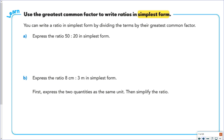When writing a ratio in simplest form, you look at the two terms and try to divide them by the greatest common factor. So the ratio 50 to 20 — we'll notice that both of them end in 0, which means we could divide them both by 10 to get the ratio 5 to 2.